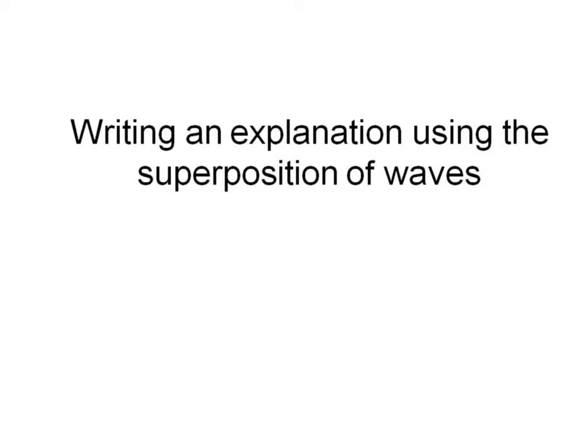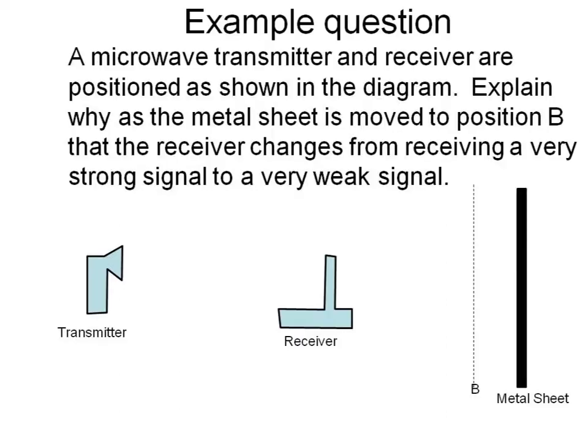In this video I'm going to look at how you can write a good explanation using the idea of superposition of waves. To illustrate the general approach I'm going to use this example question where a microwave transmitter and receiver are positioned as shown in the diagram. You've got the transmitter here, receiver here, and the question asks you to explain why the metal sheet, when moved to position B, causes the receiver to change from receiving a very strong signal to a very weak signal.